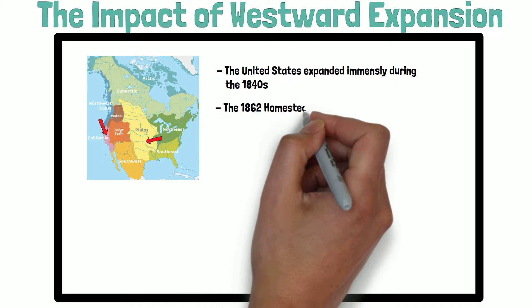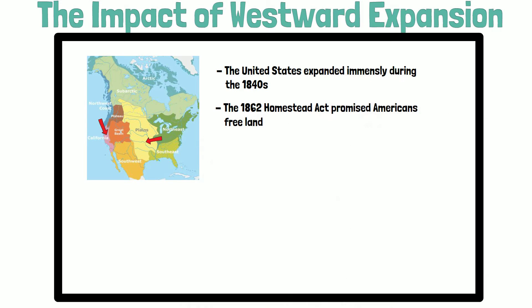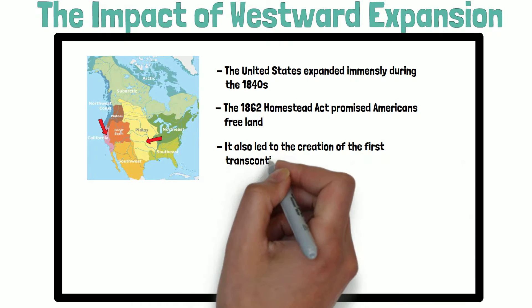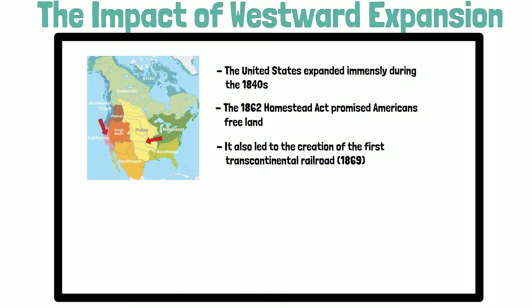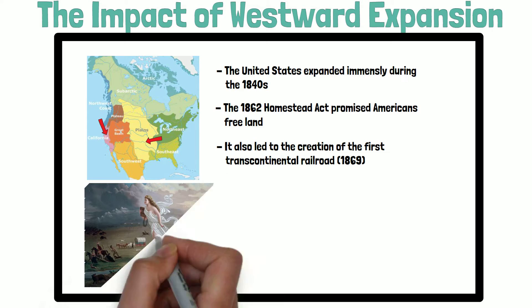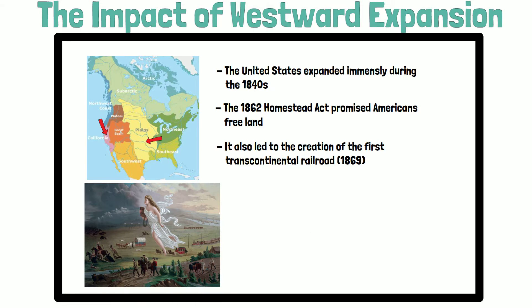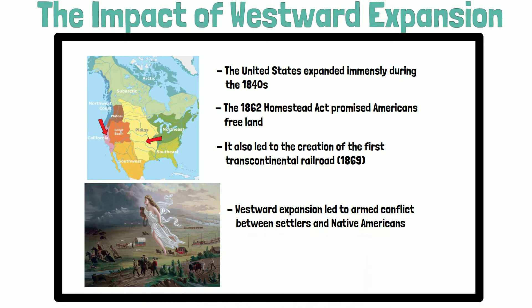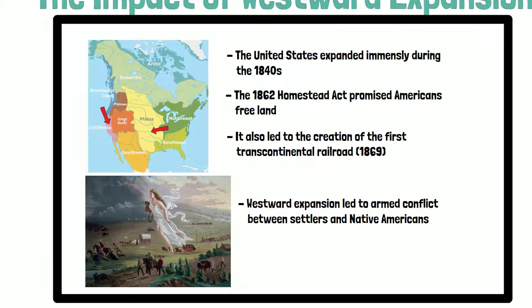The 1862 Homestead Act promised free land to any Americans who could keep a farm, and the building of a railroad that would cross the continent in 1869 made fast travel possible. As Americans moved westward, they began to encounter the Native populations that had lived there for generations, which often led to conflict between the two groups.